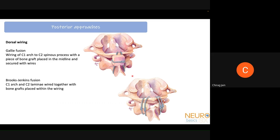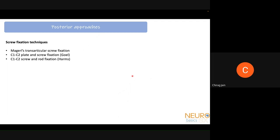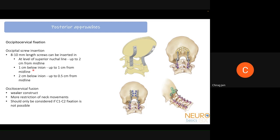The posterior approach is now most commonly used for C1-C2. Historically, dorsal wiring techniques were used — Gallie fusion, Brooks-Jenkins fusion, Sonntag modification, and inter-laminar clamp techniques — all largely no longer used. The screw fixation techniques now predominate. Magerl's transarticular screw fixation came first, followed by C1-C2 plate-and-screw fixation described by Dr. Atul Goel, which revolutionized AAD management. Harms then converted this into screw-and-rod fixation.